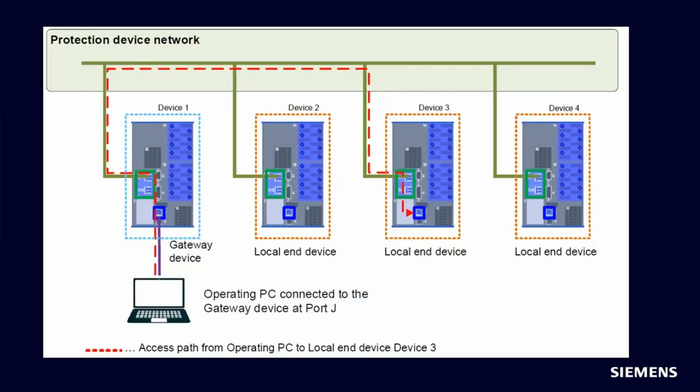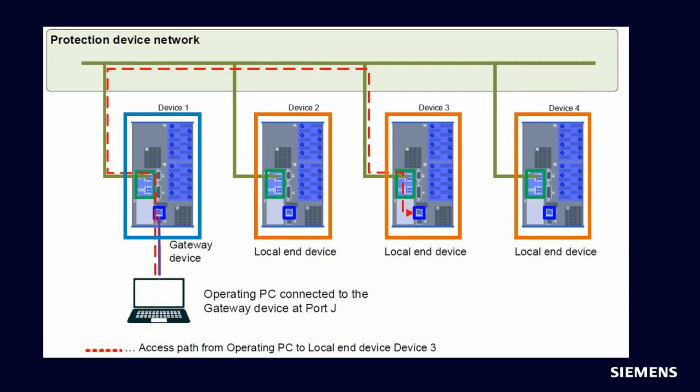With the routing manager functionality, it is possible to access via one gateway device to several local end devices. The gateway and all local end devices must be connected into a protection device network. This protection device network can, for example, be the process bus network which is used for the distributed bus bar protection.